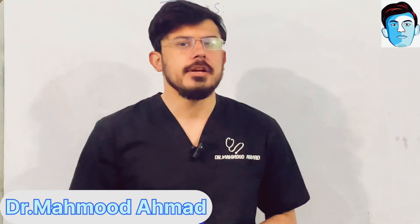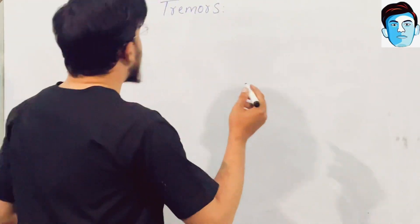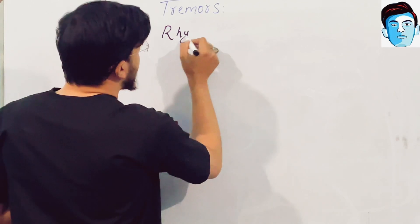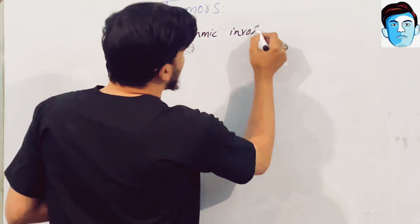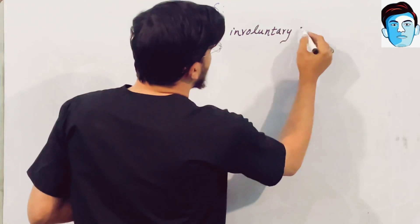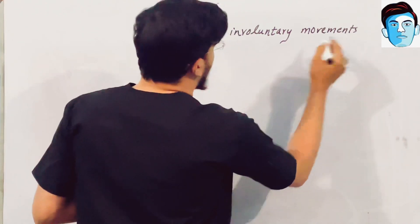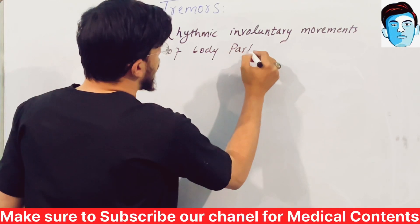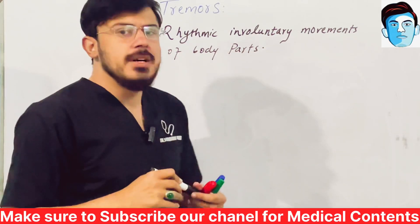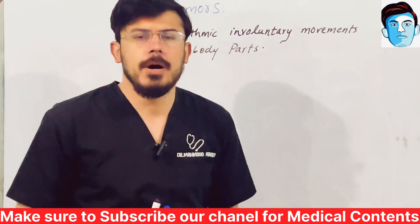In this video series on Neurology Medicine, today I will discuss tremors. First of all, you should know what a tremor is. It is a rhythmic involuntary movement of body parts. Tremors are the rhythmic involuntary movements of one or more than one body parts.